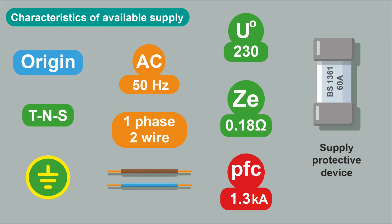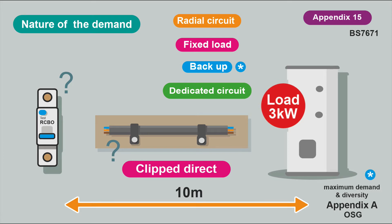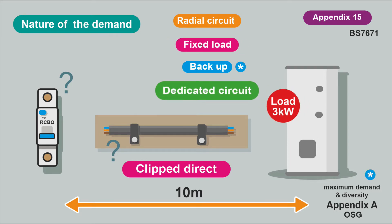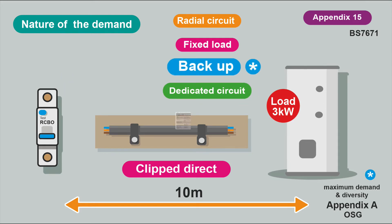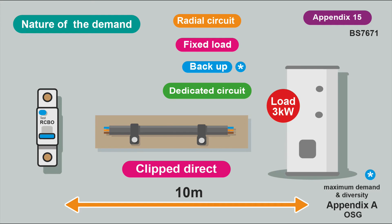We consider the voltage, the Ze, and the prospective fault current, and the type and rating of the service cutout fuse. Next we look at the nature of the demand: it's a radial circuit, the load is three kilowatts, it's a fixed load, and we'd like it to be a dedicated circuit feeding just this one appliance. It's a backup supply, so even though we can't apply diversity, it's useful to know that for our maximum demand calculation.